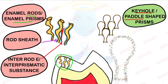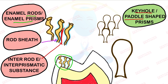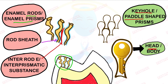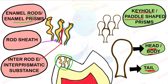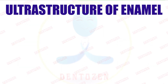It is called keyhole because it resembles the shape of a keyhole — that is an important viva question. It has two parts: the first part is known as the head or body of the keyhole-shaped rod, and the second part is the tail of this rod.